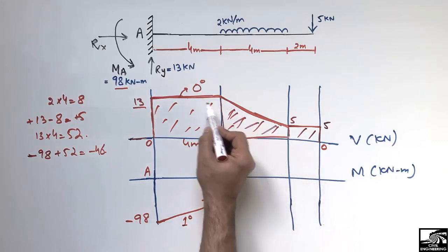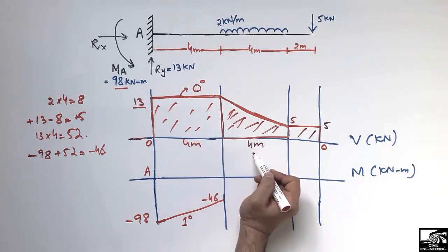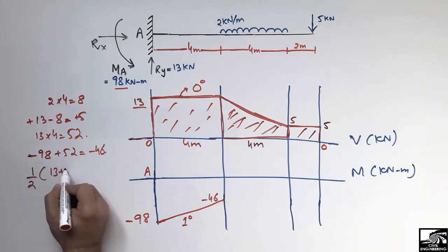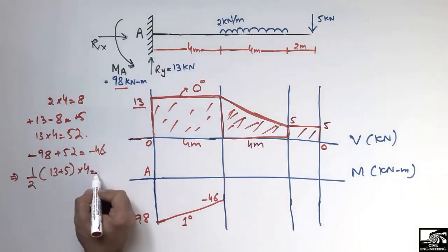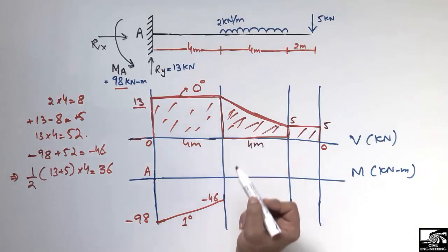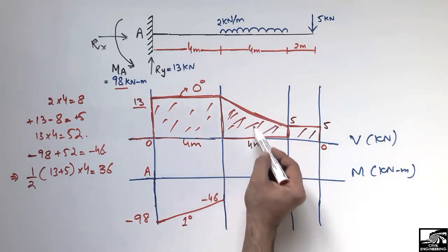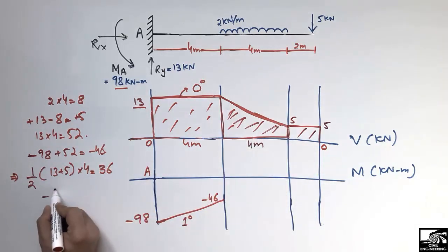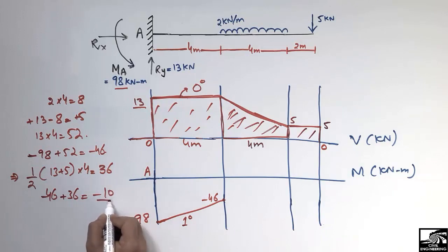To find the area of this trapezoid: height values are 13 and 5, and the width is 4 meters. Area = half × (13 + 5) × 4 = 36. This area is above the reference axis, so it is positive. Adding to minus 46: minus 46 plus 36 gives minus 10 kN·m. Since the shear force was a first-degree line, the bending moment here is a second-degree parabolic curve.